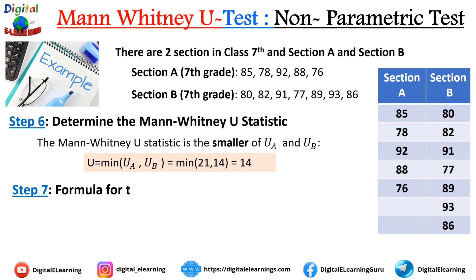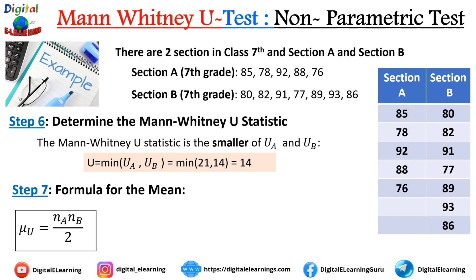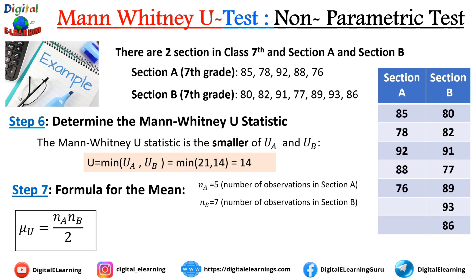Step 7: calculate the mean. The formula for the mean (μ_U) is N_A × N_B divided by 2. Plugging in N_A = 5 and N_B = 7, we get a mean of 17.5.